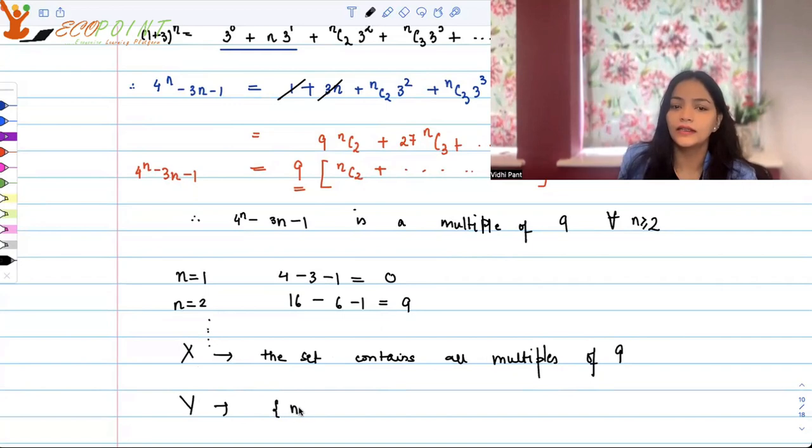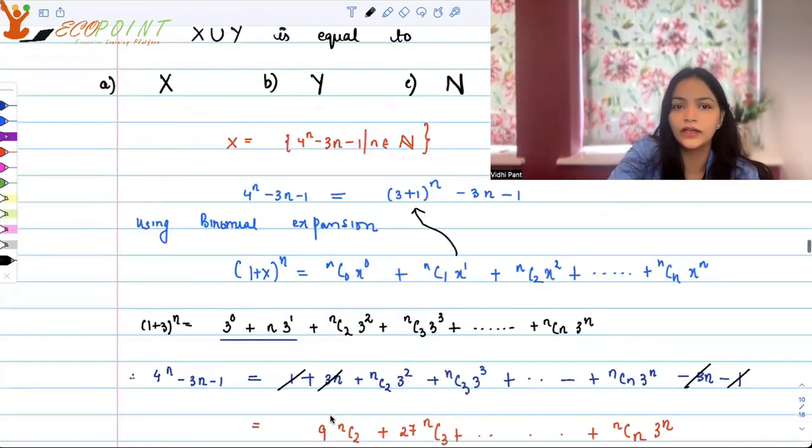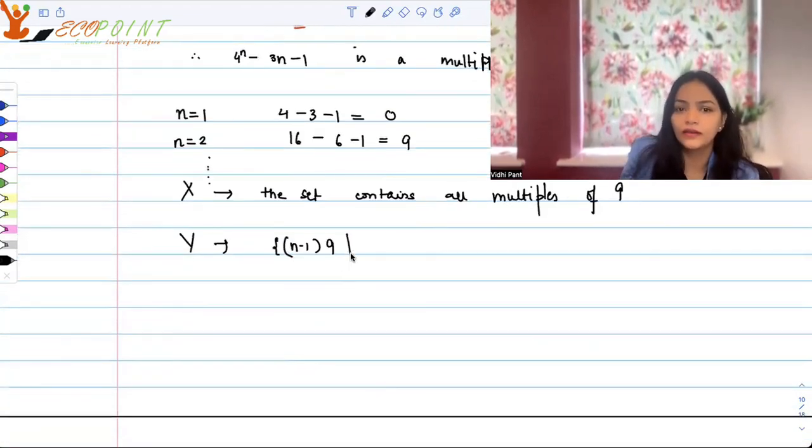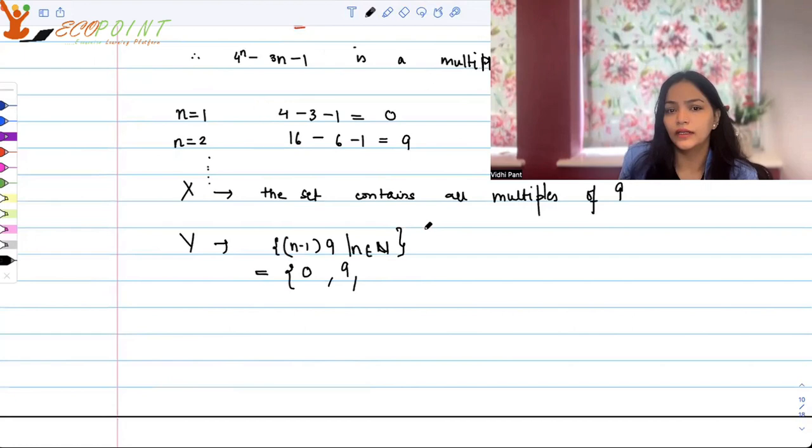Y is (n-1)·9, that is what it's given, right? 9(n-1) where n is a natural number. So Y contains, if I start giving it values, Y contains 0, then 9, then 18, and so on and so forth.